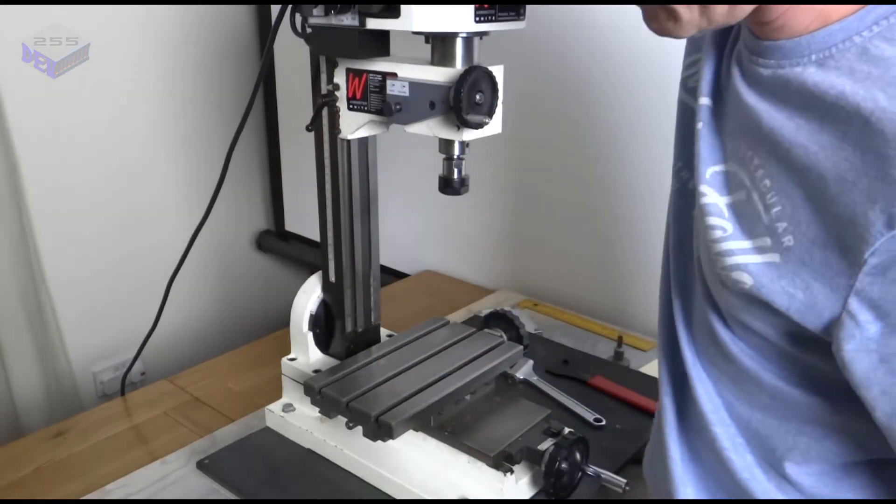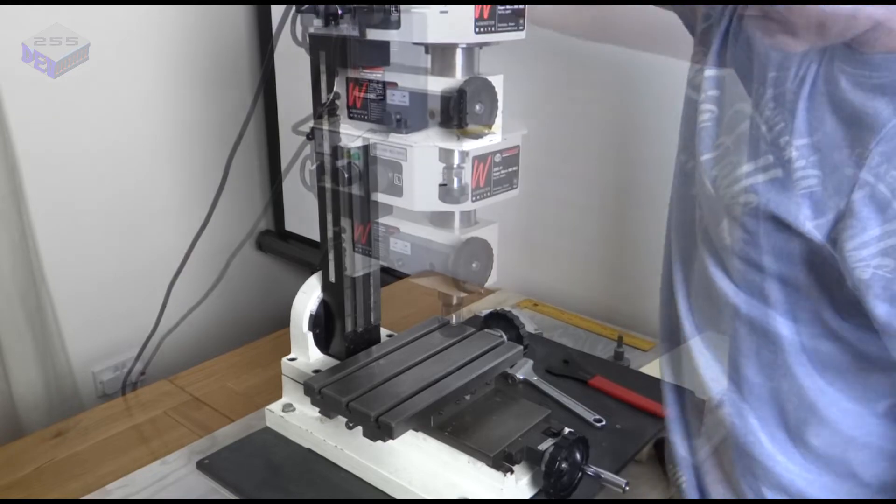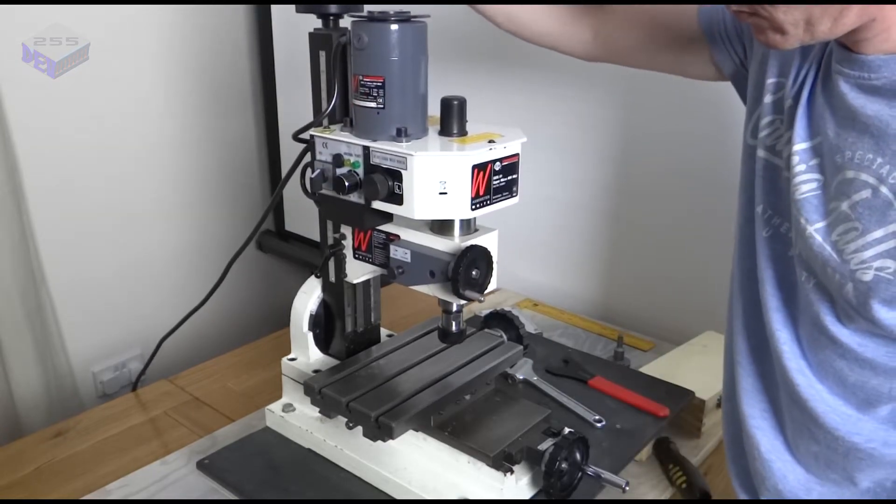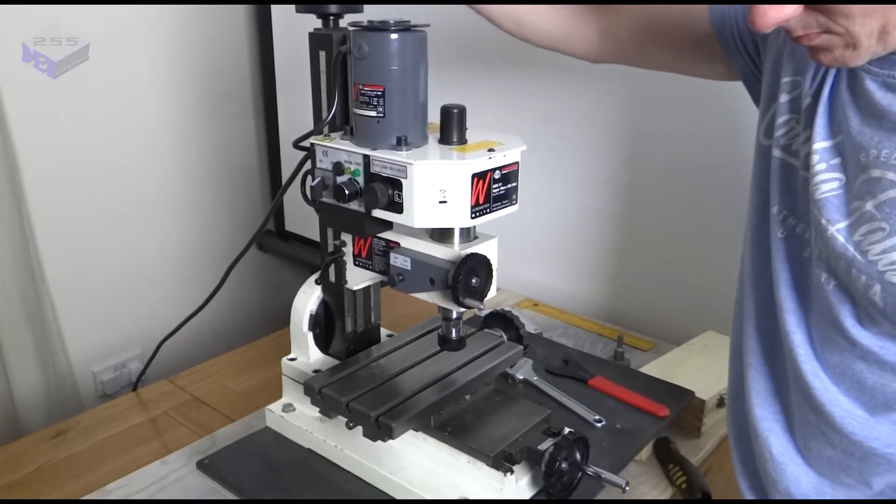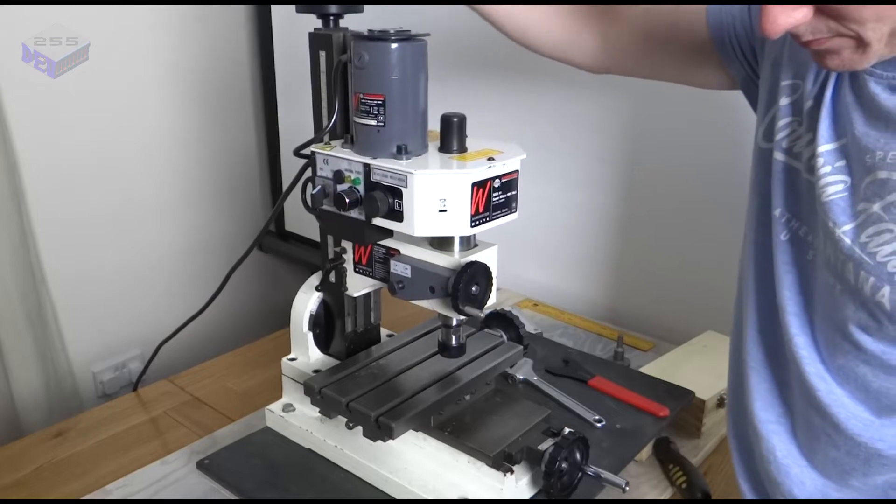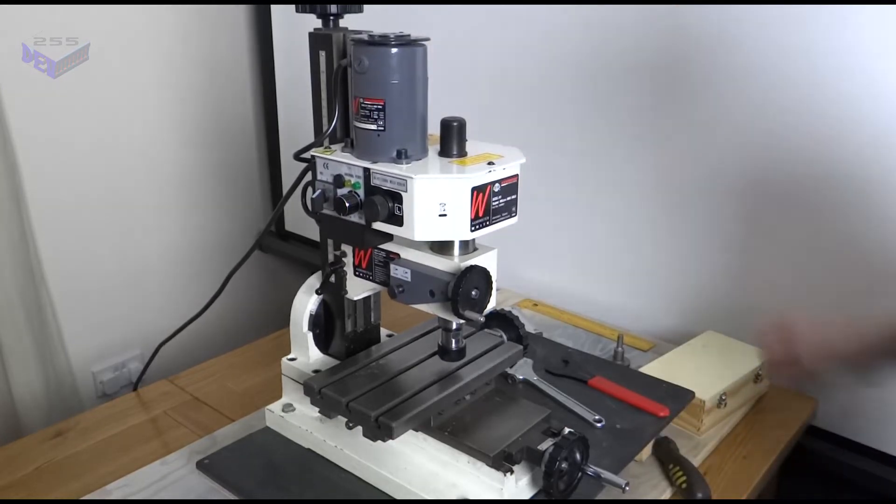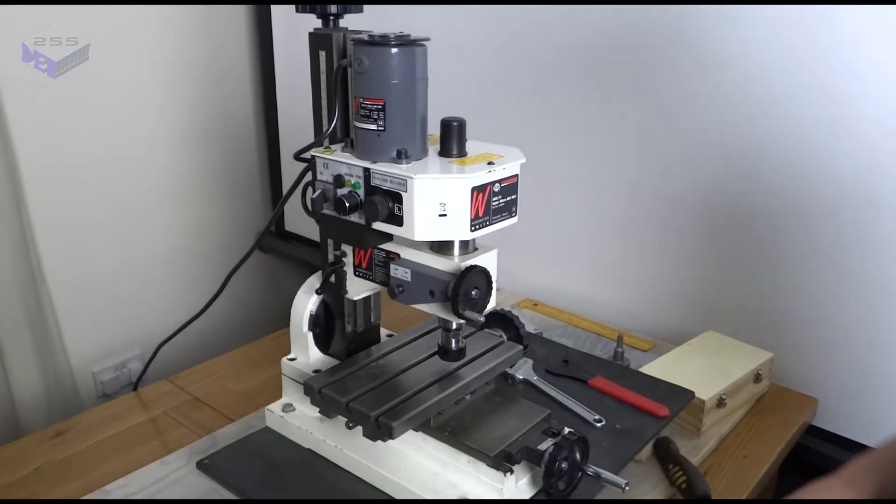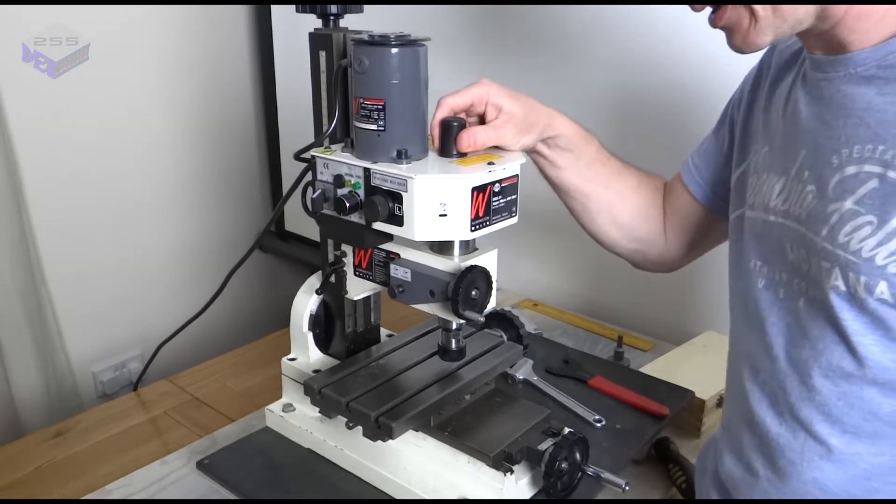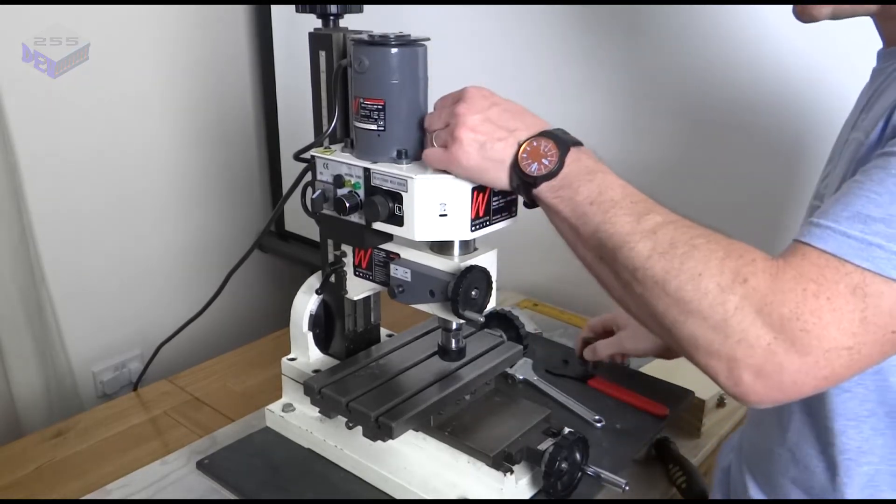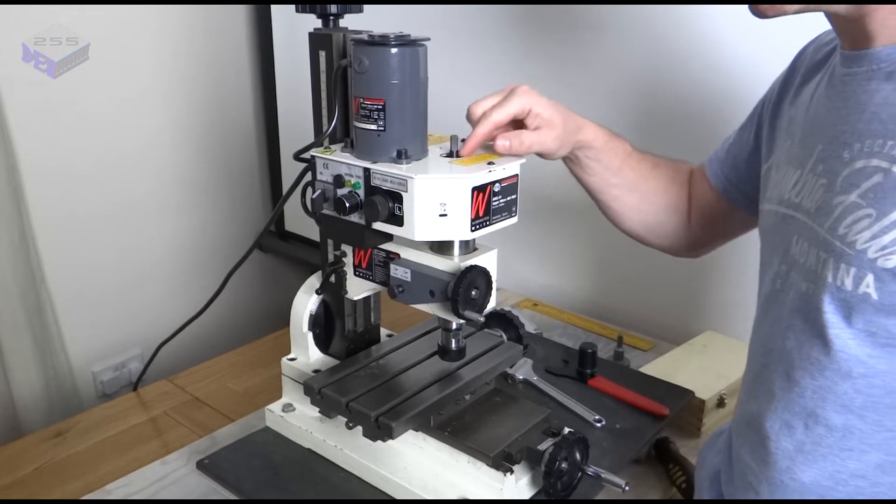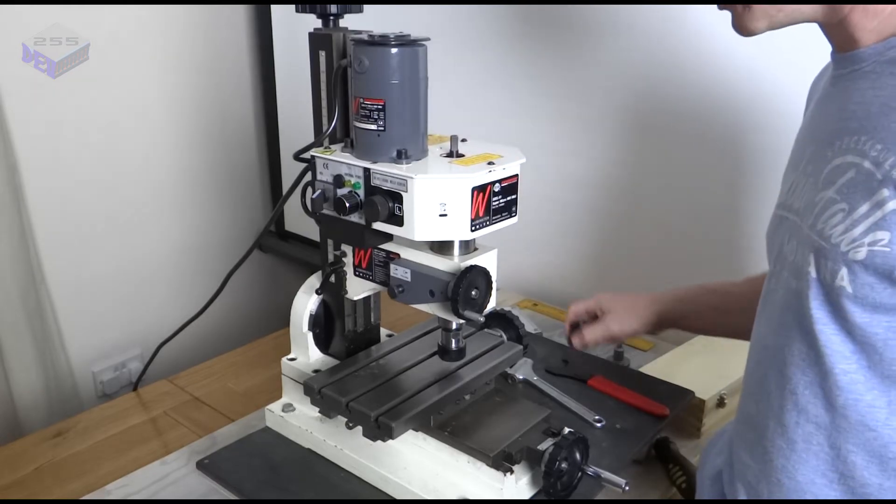So loosen that off and put that down. Also you want to take this drawer bar cap off and just lubricating in there. I use a PTFE lubricant to go into there.